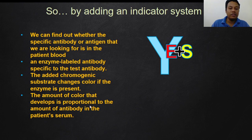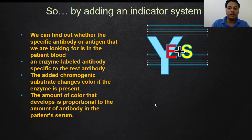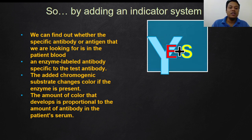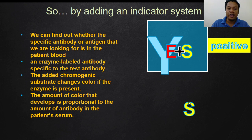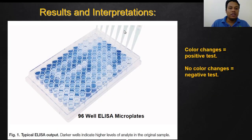The amount of color that develops — how dark the color is — is proportional to the amount of antibody in the patient's serum. So we can quantify and determine how many antibodies are in the patient's serum. This is a positive test. But if in the final step there is no enzyme-labeled antibody available, the substrate will not have the specific enzyme to react with, so there is no color change and the result is negative.